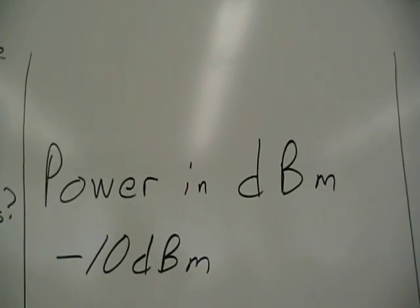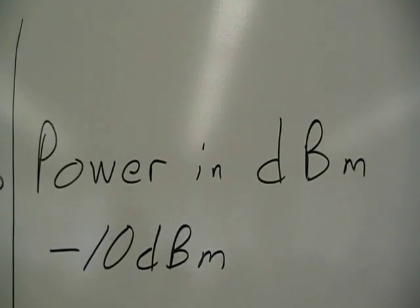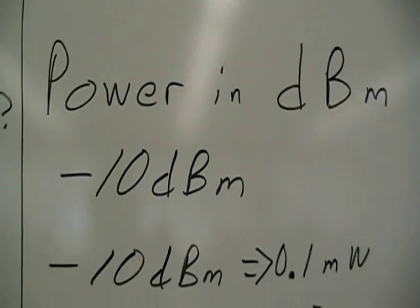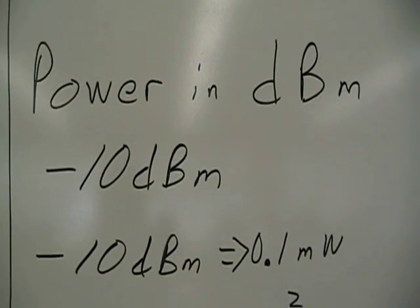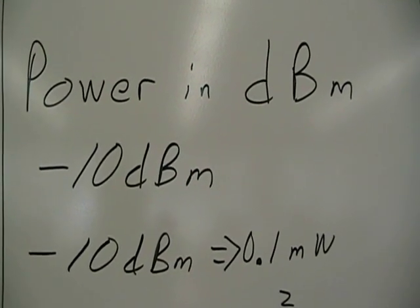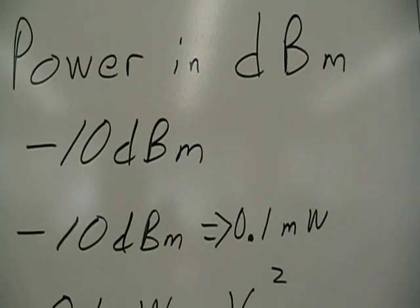So we start with the power in dBm. Power in dBm equals -10 dBm. Let's convert that to a value we're used to for power, which is watts. -10 dBm is equal to 0.1, or 0.1 milliwatts.